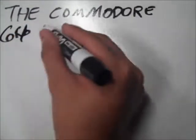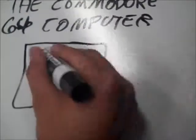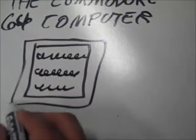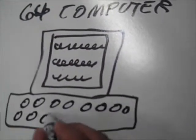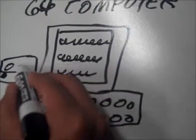The Commodore 64 started selling in 1982 with great success. It sold for $595, much less than its competition, and because of this it became the best-selling computer of all time.